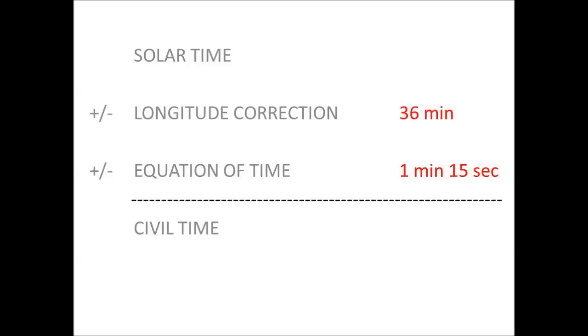Also take a look at the equation of time table which shows differences for every particular day in the year. For 28th of August which is today is 1 minute and 15 seconds. So my sundial should be off 37 minutes from what I have on my watch.